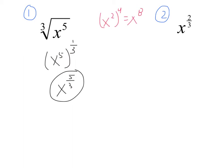Now let's rewrite x to the two-thirds using radicals. You need to remember this is the same thing as x to the one-third, squared, because one-third times two is two-thirds. And if we were to write this with radicals, this is the same thing as the cube root of x squared.